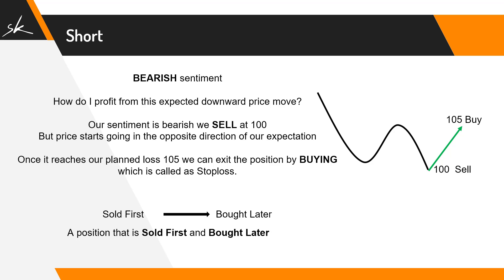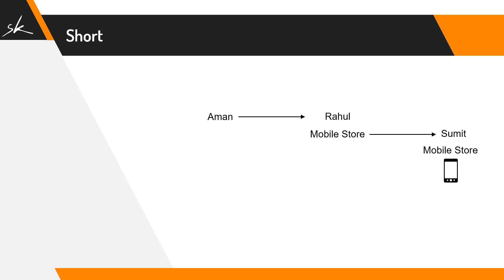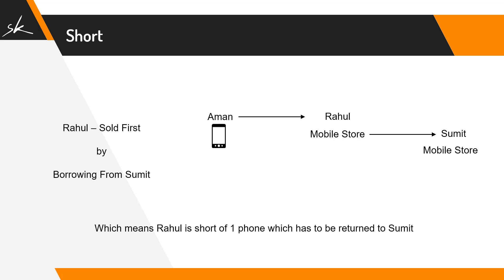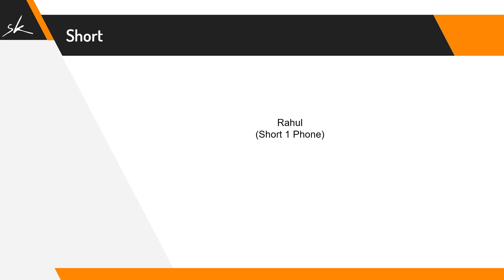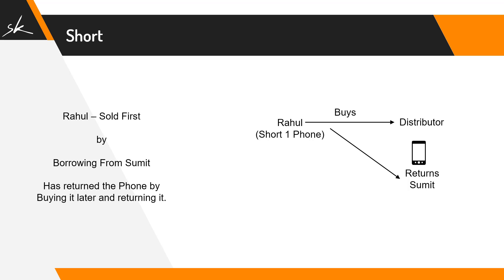Now you might be wondering: how can we sell something we don't own? Let's take an example. Aman goes to Rahul's mobile store looking for a specific model. Rahul doesn't have it in stock, so he goes to Sumit, who has a store a few shops down. Sumit has that handset, so Rahul borrows it, comes back, and sells it to Aman. What Rahul did was sell first by borrowing from Sumit — meaning Rahul is now short one phone that he must return. Rahul then goes to his distributor, buys that phone, and returns it to Sumit. So Rahul sold first by borrowing it from Sumit, and later bought it from his distributor to return it.